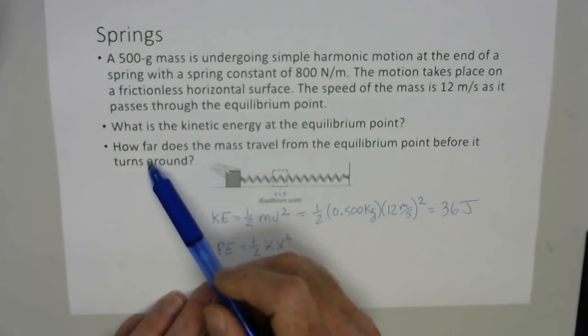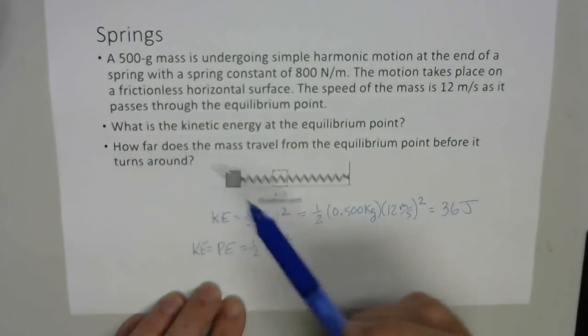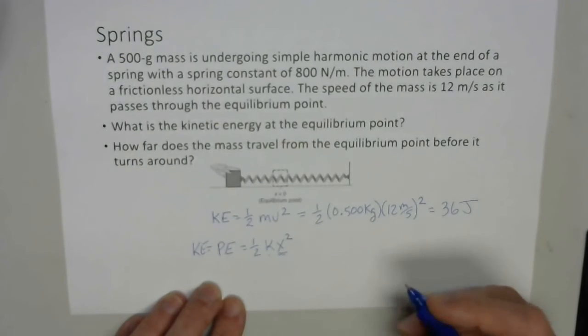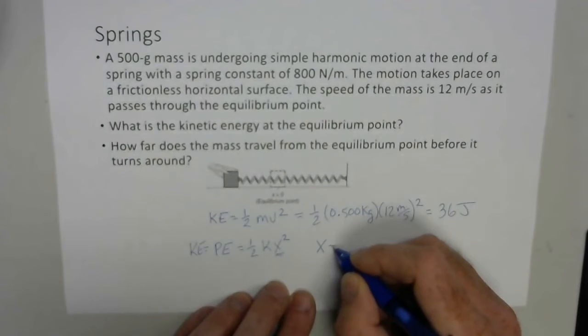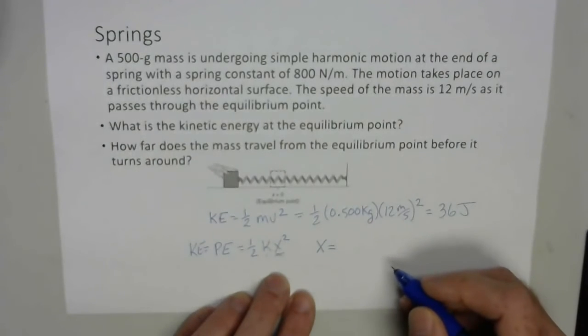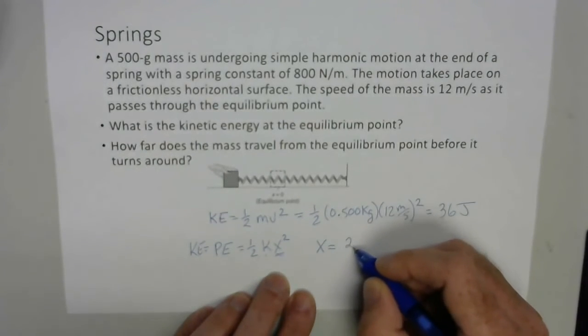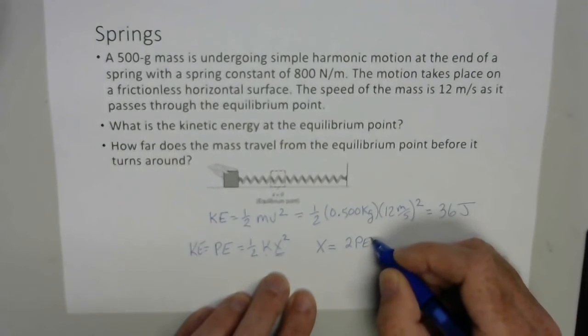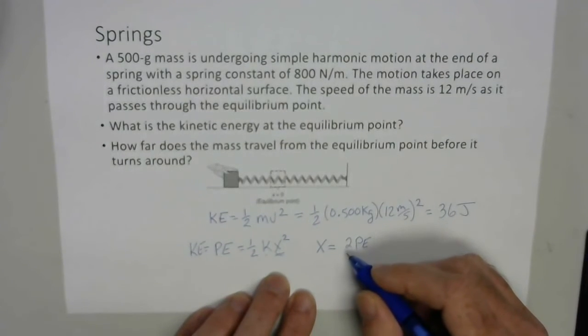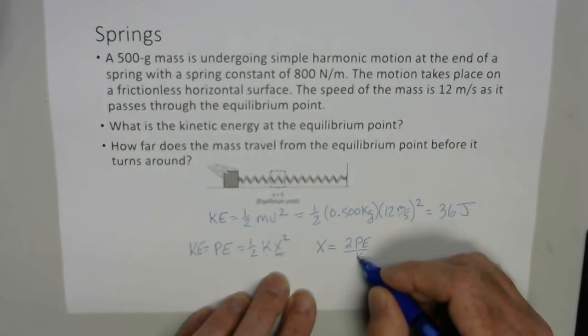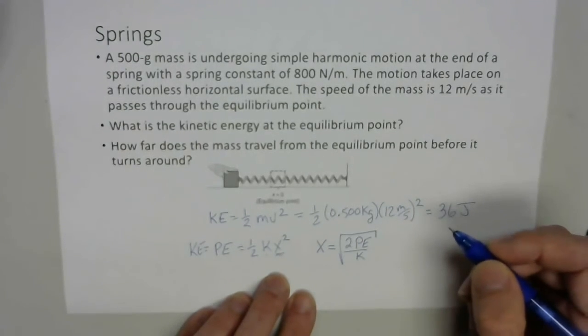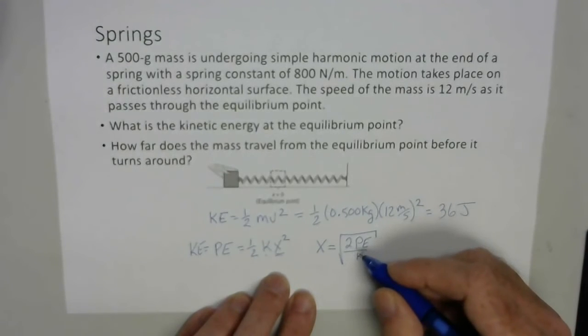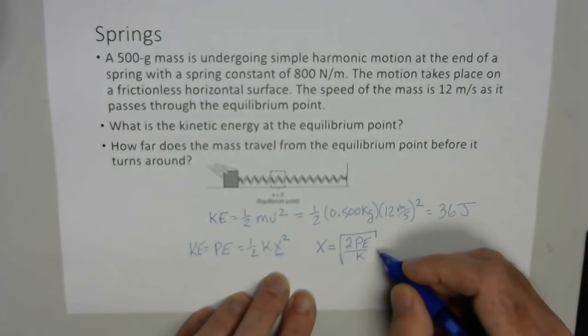And that's actually what we're trying to find is how far we're trying to find this displacement. So solving for x, x will be 2 times the potential energy divided by the constant square root of the whole thing, just algebraically solving for x squared, and then you take the square root to get x by itself.